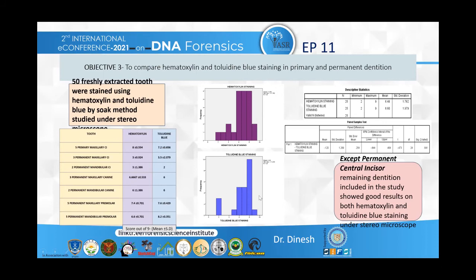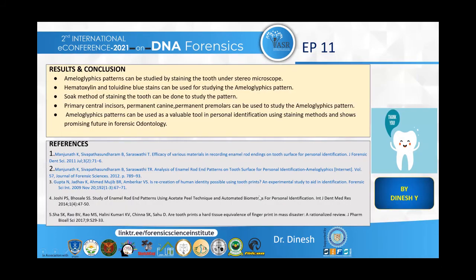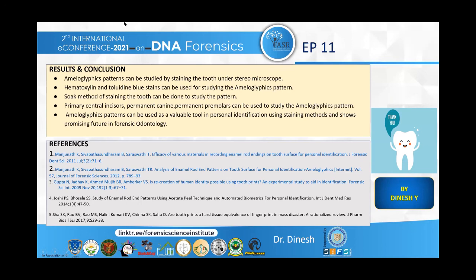Except for the permanent central incisor, the remaining dentition was found suitable for studying the ameloglyphics pattern. In conclusion, ameloglyphics patterns can be studied using staining methods under stereomicroscope. Hematoxylin and toluidine blue stains with the soak method are recommended. Primary teeth, permanent canines, and permanent premolars are all suitable. Ameloglyphics holds a promising future as a valuable tool for personal identification in forensic odontology.